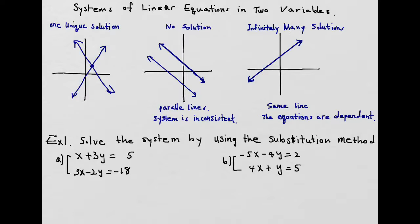The first type is one unique solution. Whenever you have one solution, it's because those two lines meet in one location — like the first graph — so there will be just one solution.